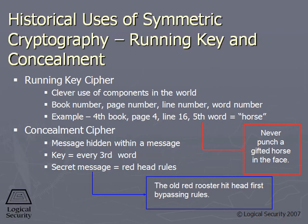There's another way of doing encryption that is not using sophisticated algorithms like we use today. One example is the running key cipher. Let's say that I want to get a secret message to you. The algorithm itself is we have a set of books, and what I send to you — you and I have the exact same set of books — is just a bunch of numbers. But those numbers mean something to you. That's the key.